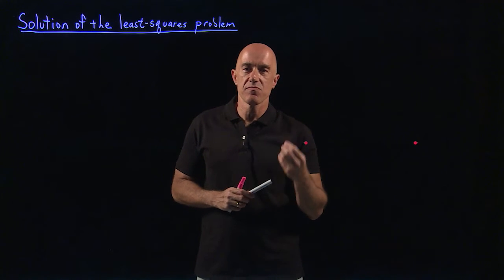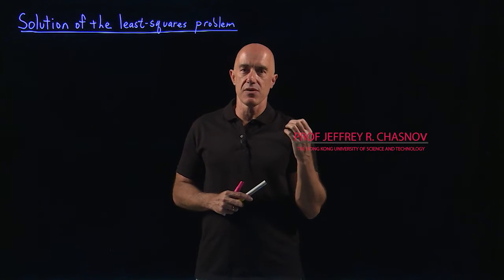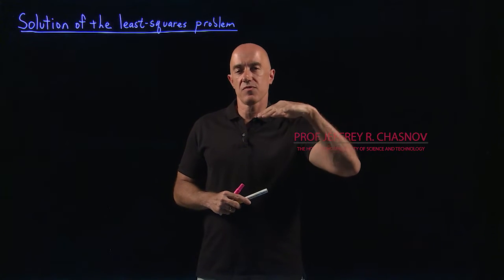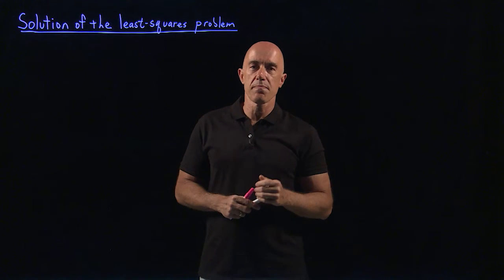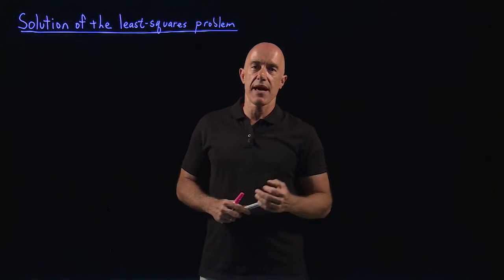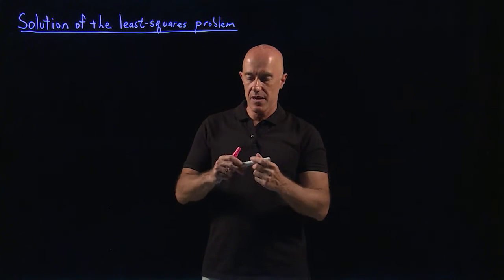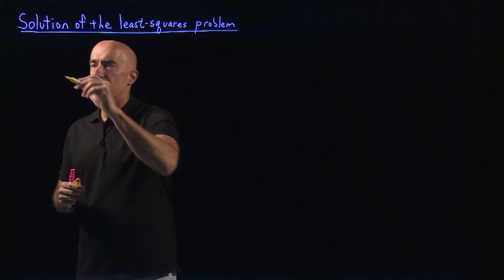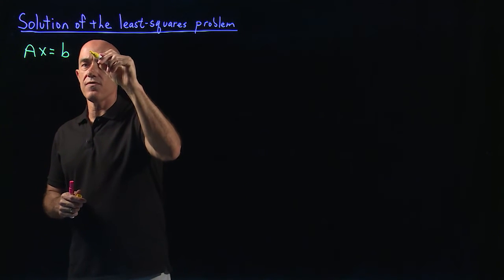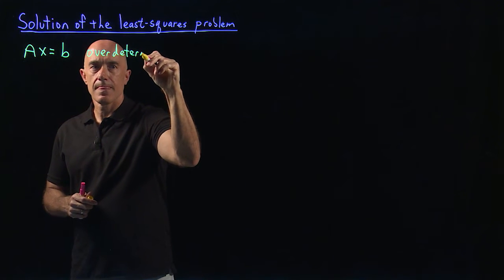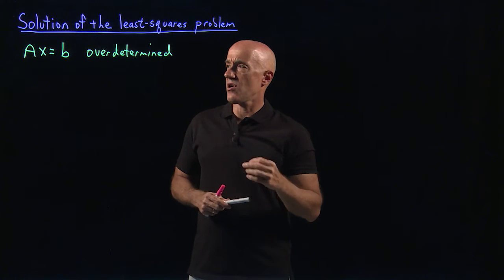In the last video I introduced the problem of least squares. The problem was that we had some noisy data that we thought could be fit by a line and we needed to figure out how to draw the line. My daughter just drew it by hand but we should have a more systematic way of doing it and we're going to use matrix algebra. The general problem is that we have the equation Ax equals b, which is an overdetermined system — meaning there are many more equations than there are unknowns.